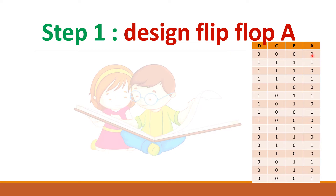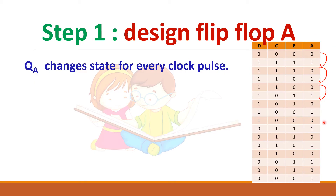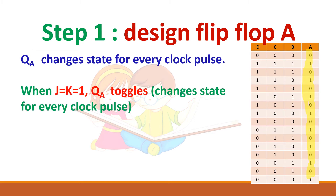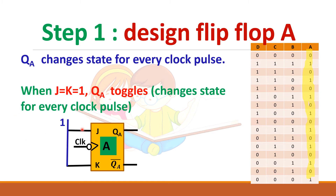First let us design flip-flop A. You can see flip-flop A is toggling: 0, 1, 0, 1, 0, 1 — so every clock cycle it should toggle. For that, we connect J and K to 1. We have seen that when J and K are both 1 the output toggles, so QA will change its state every clock cycle, becoming 0, 1, 0, 1, 0, 1. So connect J and K equal to 1.